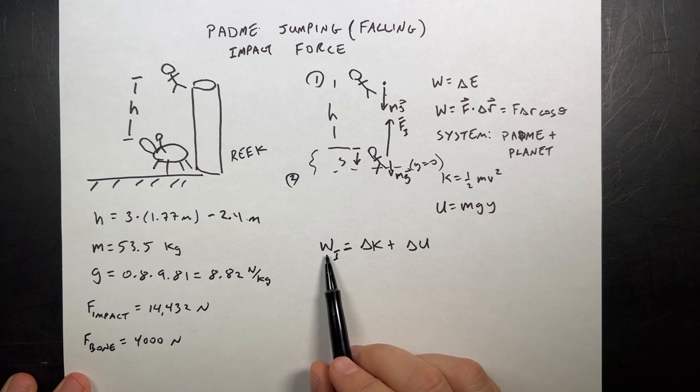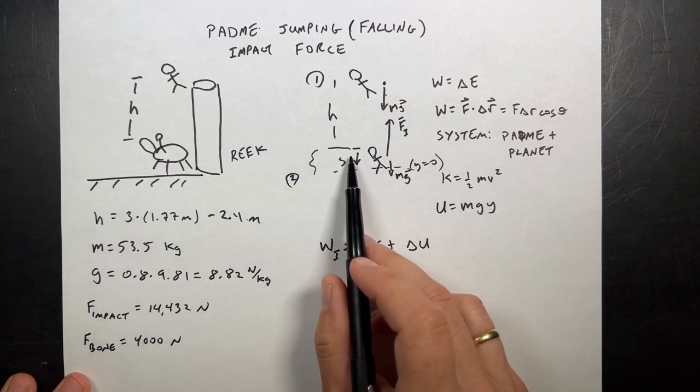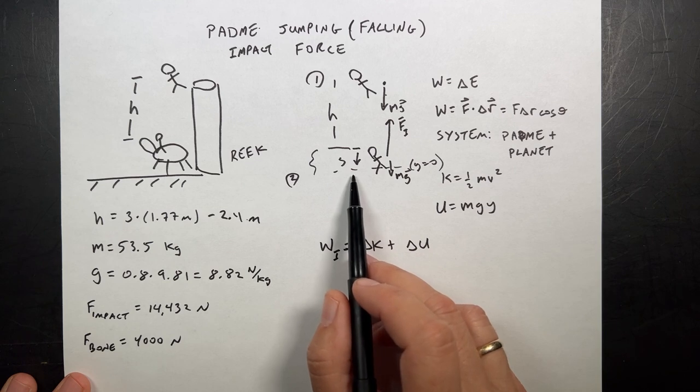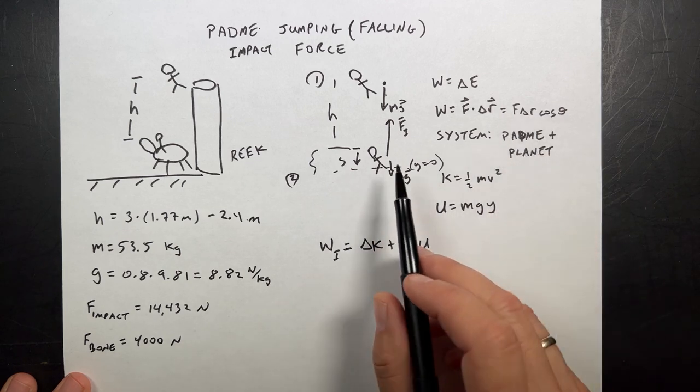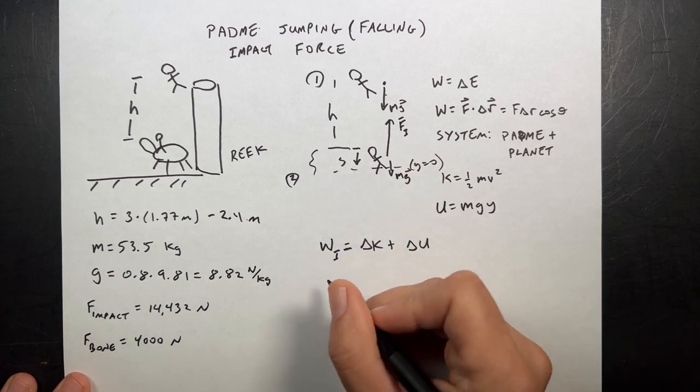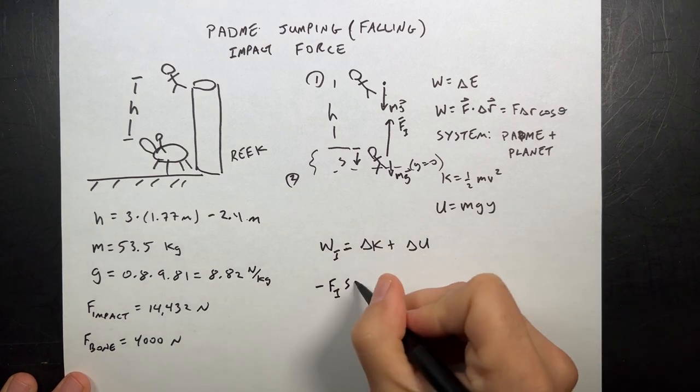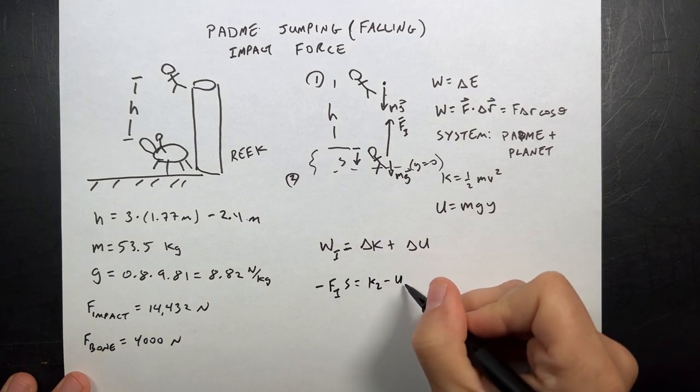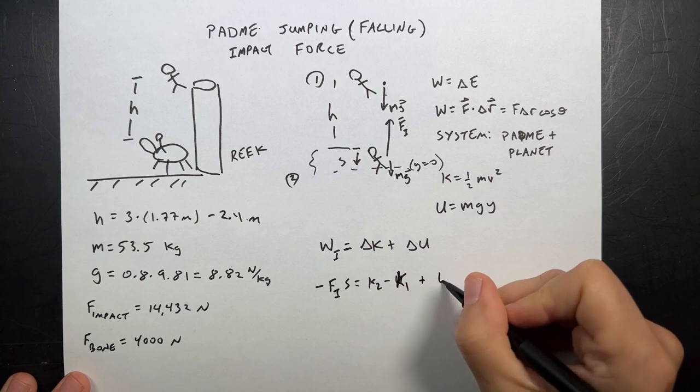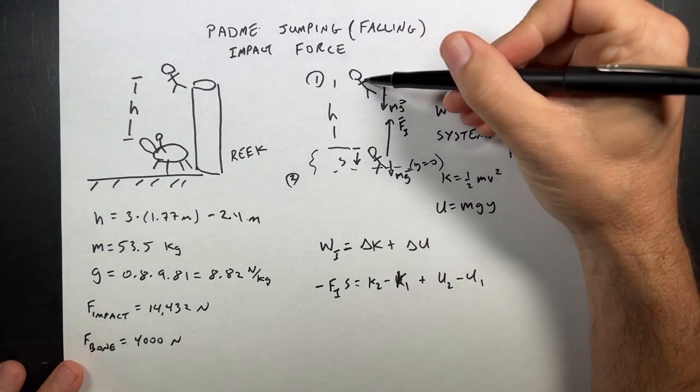Okay, so let's say the work done by the impact is going to be the change in kinetic plus the change in gravitational potential energy. And I think here also you see a common mistake that books and people make. They say the energy before is equal to the energy afterwards. Well, that's not true here because there's work done on the system, and that work is this impact force.